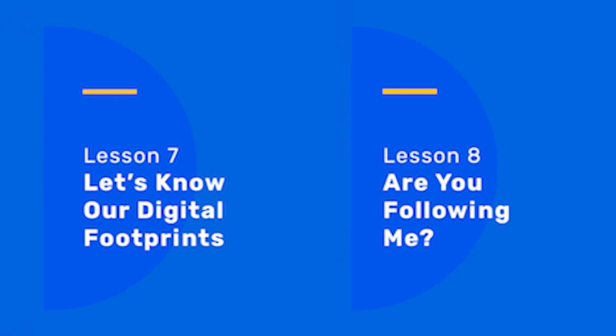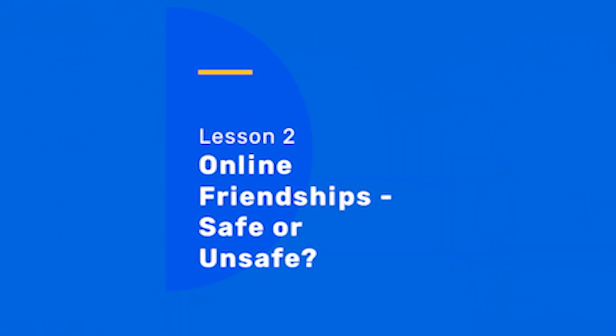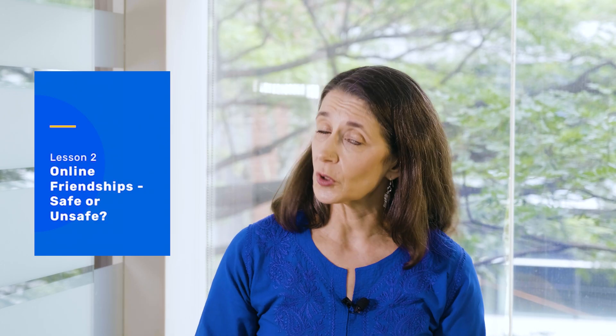In the grade six curriculum, you'll find lessons seven and eight where we introduce the concept of digital footprints and talk about how digital footprints are being used by marketers to send you advertisements. In grade seven, check out lessons three and four where we talk about the longevity of digital footprints and your online persona. In grade eight, please check out lesson two where we talk about online friendships and how much information you should be sharing with others you may or may not know when you go online. It's all about retaining your privacy, managing your information, and making sure that the people you don't want to know about you don't know about you.